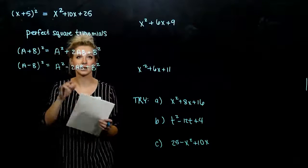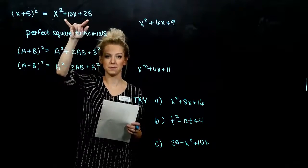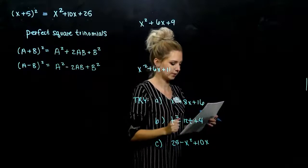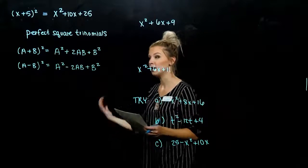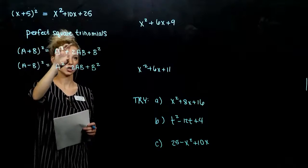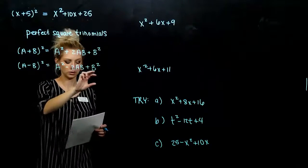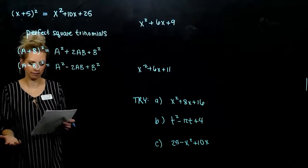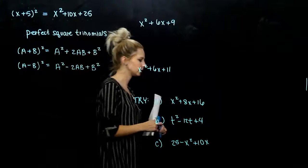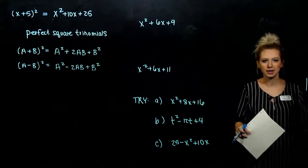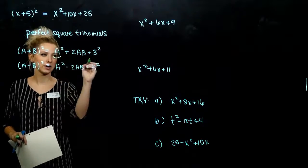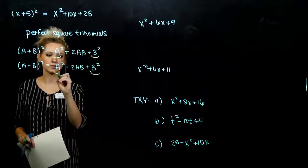Because it's a trinomial that can be factored as a perfect square — pretty intuitive. If we actually foil out a generic case, a plus b and a minus b, these are the trinomials that result. Looking at the pattern, in each of these cases, the first term and the last term are both positive: a squared, b squared, b squared, a squared — those are all positive.